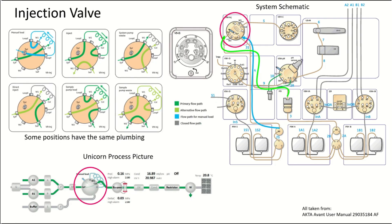Okay, so the injection valve has six different positions, but some of those positions have the same plumbing. You can see the system pump waste and the direct inject positions are the exact same, same with inject and sample pump waste. The default position, manual load, does not allow you to run the sample pump and the system pump at the same time. Other positions like sample pump waste will allow you to run them both.